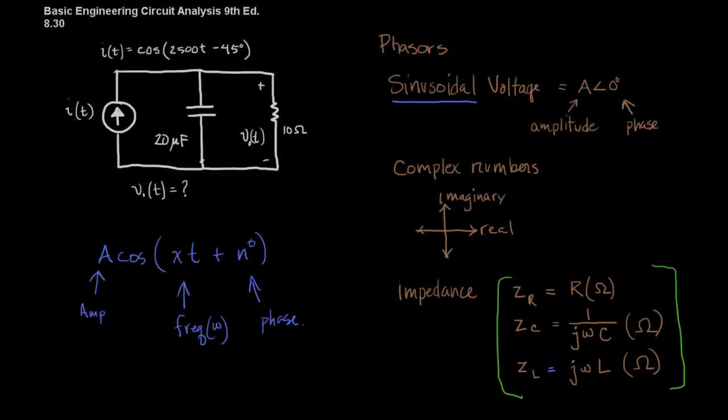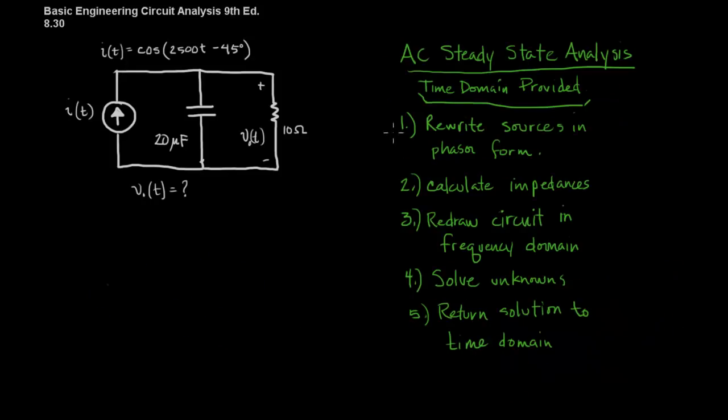So when we are going to solve a phaser problem, we're going to use these steps. First we'll rewrite the source into a phaser form. We'll calculate the impedances. Then we'll redraw the circuit in the frequency domain, so we'll move it out of the time domain. And then we can solve for our unknowns using any method that we've used prior to this. And then finally, when we're done, we'll return the solution into the time domain.